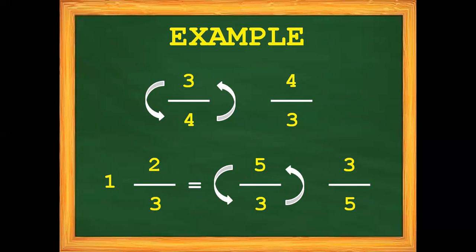We interchange the position of the numerator and the denominator — 5 becomes the denominator and 3 becomes the numerator. So the reciprocal of 5 thirds is 3 fifths.